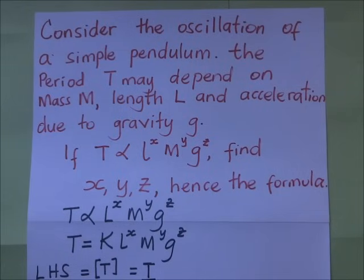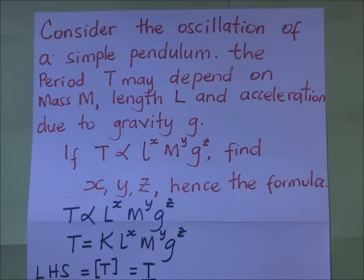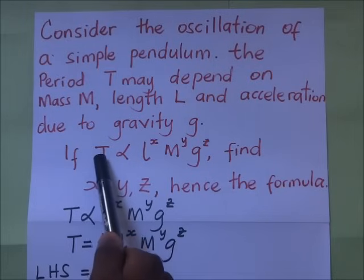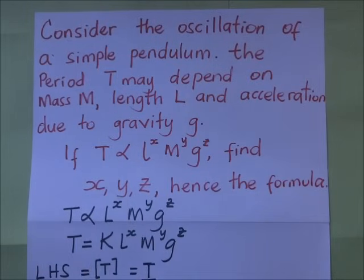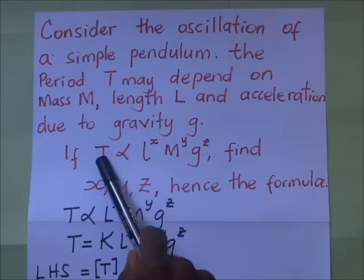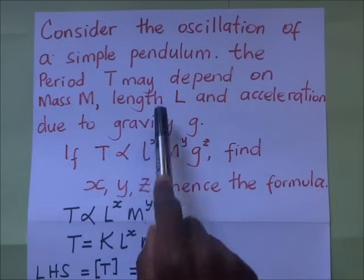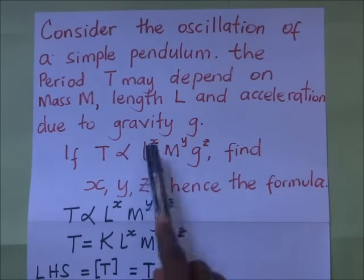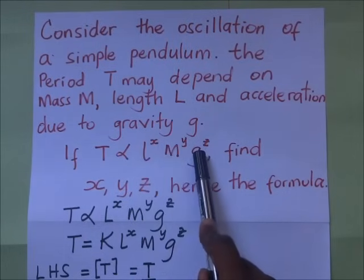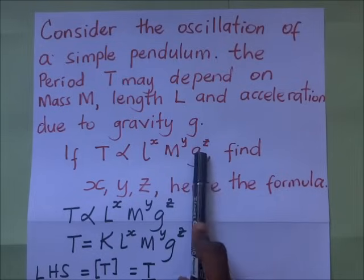To use dimensions of a physical quantity to derive equations, we use this method of dimensional analysis to derive equations only and only if we have an idea about the factors upon which a given quantity depends on. For example, given this question, we have the quantity T which we are calling the periodic time, and it is going to depend on length L, mass M, and acceleration due to gravity.